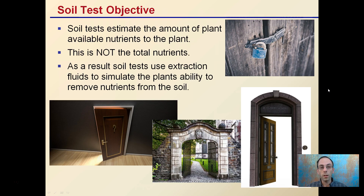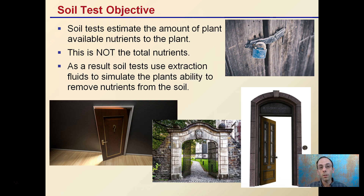The objective of a soil test is to estimate the amount of plant-available nutrients. Keep in mind, this is different — this is not the total amount of nutrients. Soil test labs use an extraction fluid to simulate the plant's ability to remove nutrients from the soil. The goal is to get the ones that the plant can easily access. If they're tied up and locked up, we don't assess those in the soil report. A different test would be needed if you want the total amount of potassium in your soil, as that would assess the amount that's locked up. We want the ones that are easy for the plant to get, and extraction fluids are used to estimate what a plant can pull out of that particular soil sample.